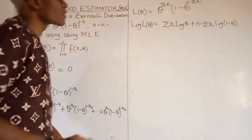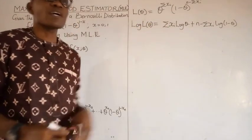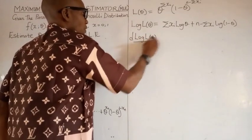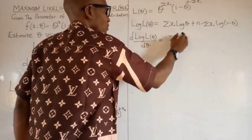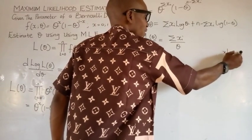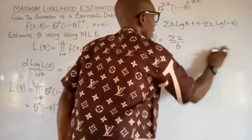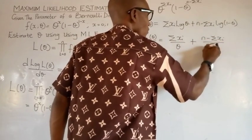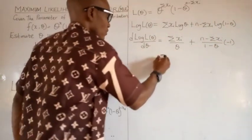We now take the differential of this log-likelihood function. We take the differential with respect to theta. Differentiating the summation of xᵢ times log(theta) term gives us summation of xᵢ over theta. Differentiating the n minus summation of xᵢ times log(1 minus theta) term gives us n minus summation of xᵢ over 1 minus theta, multiplied by negative one. We then set this equal to zero.